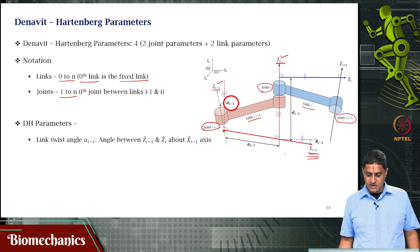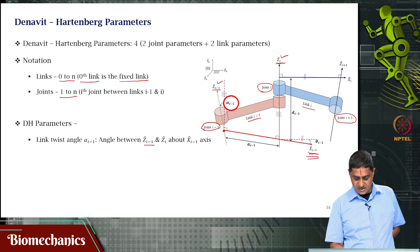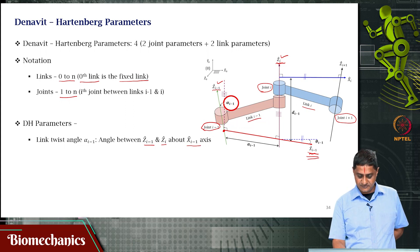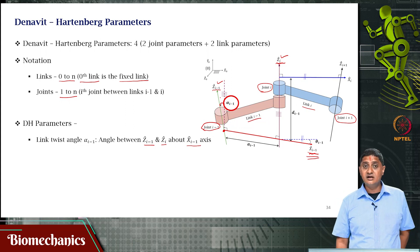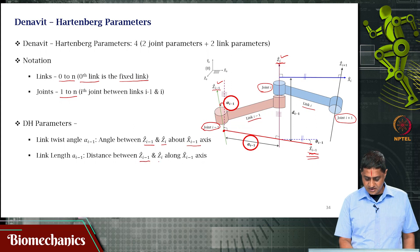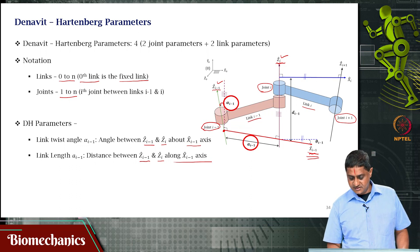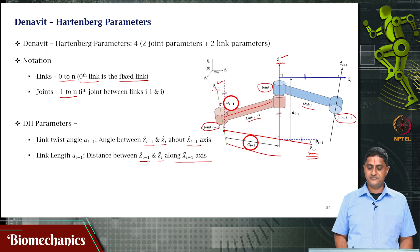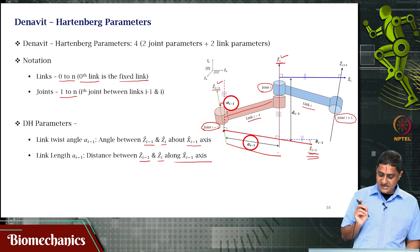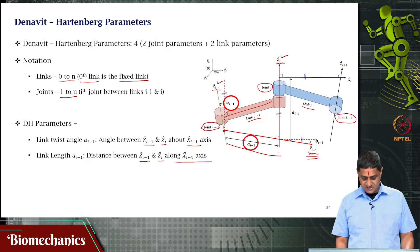What are the four DH parameters? First, alpha(i−1): this is the angle between the Z(i−1) axis and the Z(i) axis about the X(i−1) axis — this is called the link twist angle. Second, link length a(i−1): this is the distance between the Z(i−1) and Z(i) axes along the X(i−1) axis.